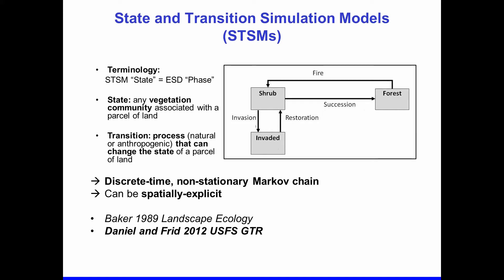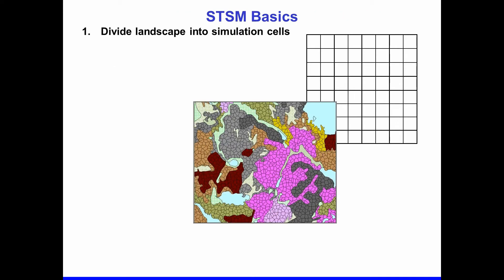There are a couple of good references to these modeling approaches. Baker is a review of various approaches to landscape modeling including state and transition simulation models, and Daniel and Frid is a review of approaches to use state and transition simulation models for modeling vegetation change on landscapes. In the next few slides, I'm going to show the kinds of inputs required to run state and transition simulation models, and describe a little bit how these models work.